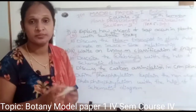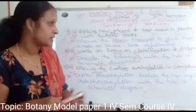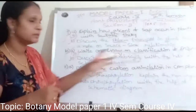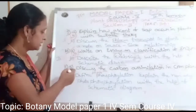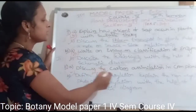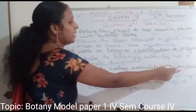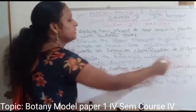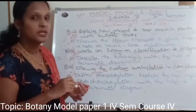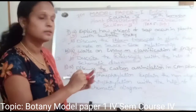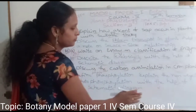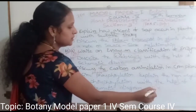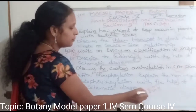Question 11a: Discuss the carbon assimilation in CAM plants. In photosynthesis, we use the C3 pathway, C4 pathway, and CAM pathway. The C3 pathway is the Calvin cycle. C4 and CAM are different types. CAM stands for Crassulacean Acid Metabolism, and CAM plants have CO2 fixation.